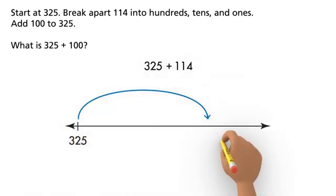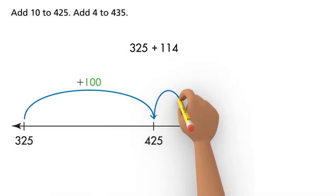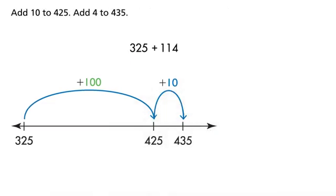Add 100 to 325. What is 325 plus 100? Add 10 to 425. Add 4 to 435.